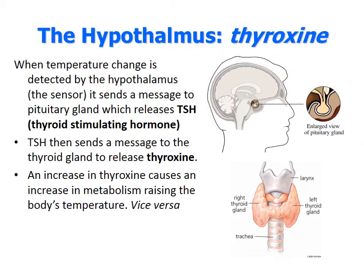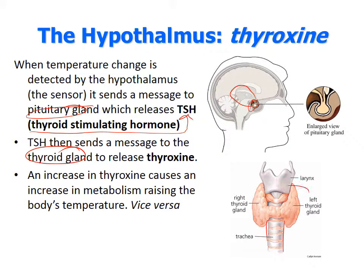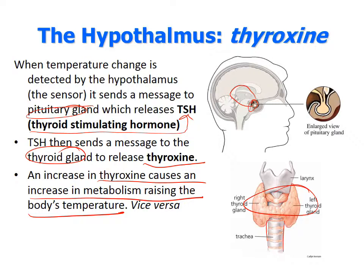When the hypothalamus detects a temperature change, it sends a message to the pituitary gland — the lower hanging part of the hypothalamus — which releases thyroid-stimulating hormone (TSH). TSH signals the thyroid gland, which sits to the left and right of your trachea in the throat, triggering the release of thyroxine. Thyroxine causes an increase in metabolism, raising body temperature, or a decrease in thyroxine reduces the metabolic rate and lowers body temperature.